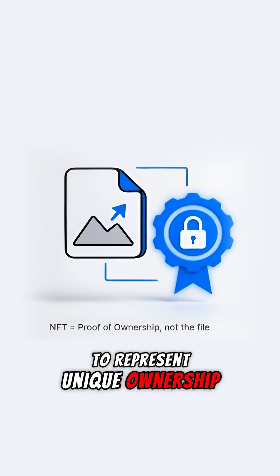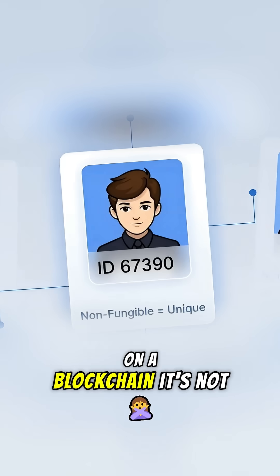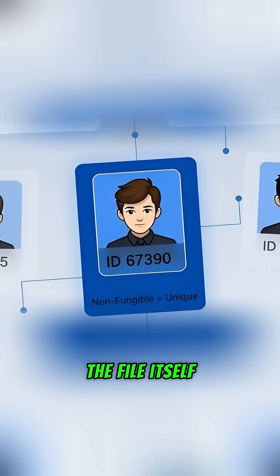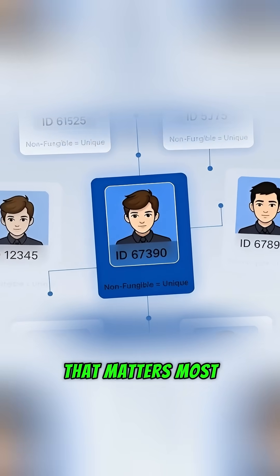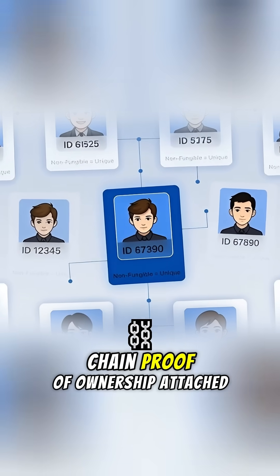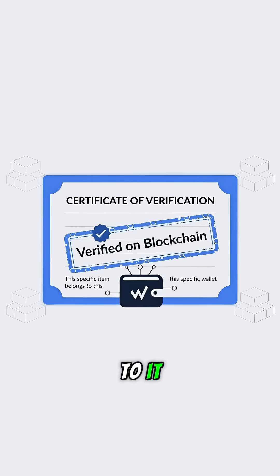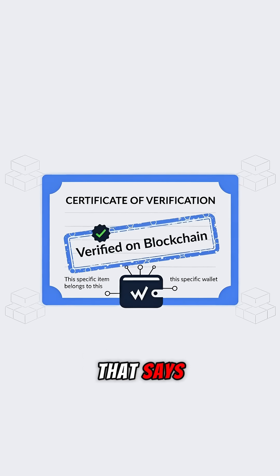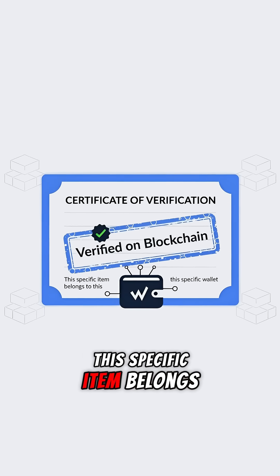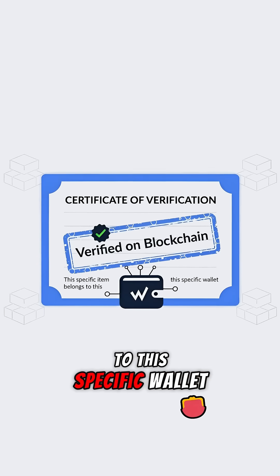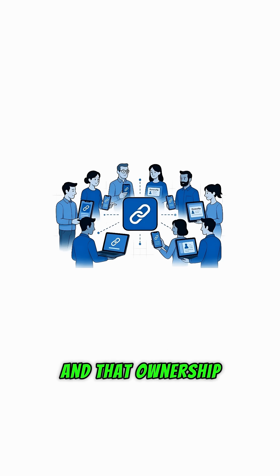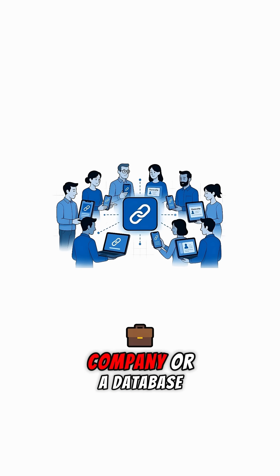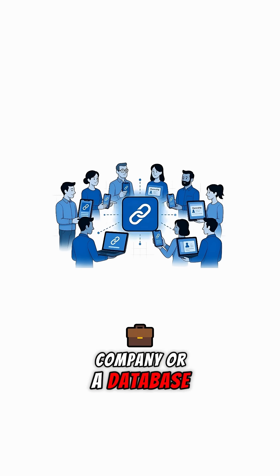An NFT is simply a way to represent unique ownership on a blockchain. It's not the image, the video, or the file itself that matters most — it's the on-chain proof of ownership attached to it. An NFT is a digital certificate that says this specific item belongs to this specific wallet, and that ownership can be verified by anyone without relying on a company or a database.